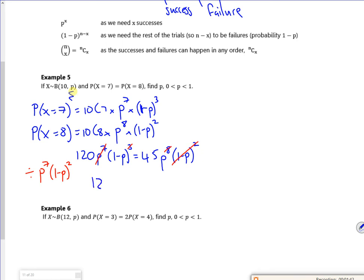So what have we got here? So 120, 1 minus P is 45 for P. So I mean I could divide through, but the 120 minus 120P is 45P.